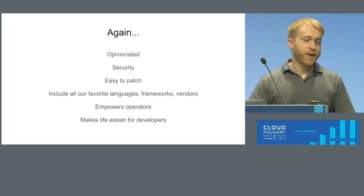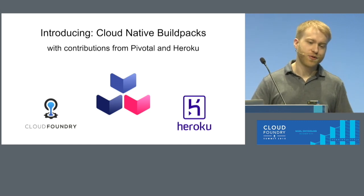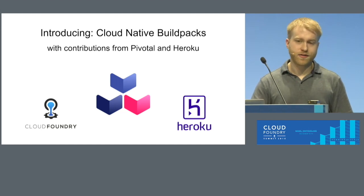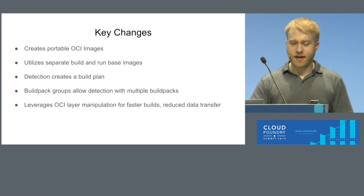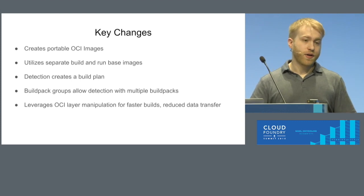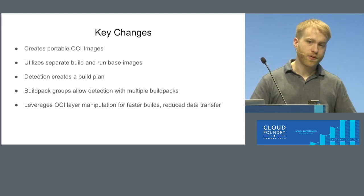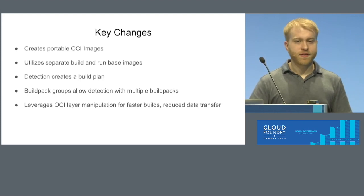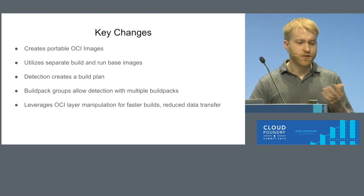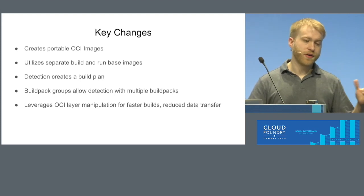So we've been working on a new buildpack contract along with Heroku — a collaborative engineering effort with contributions from Pivotal and Heroku. It's called Cloud Native Buildpacks. It actually just entered the CNCF last week. This new contract has some really key changes over the previous one — it's sort of a complete breakaway from what we had before. It creates portable OCI images. It uses separate build and run images, so you can have compilers on one image but not have that in your final container. The detection process gets a lot more advanced, involving looking through the application, figuring out what dependencies need to get supplied, and creating a plan for the build ahead of time. It also kind of serves as a bill of materials for the container afterwards.